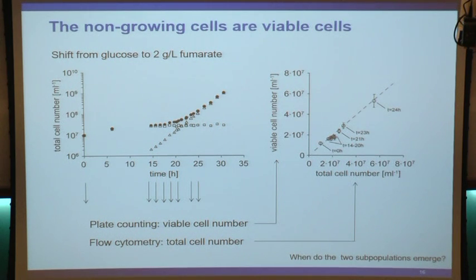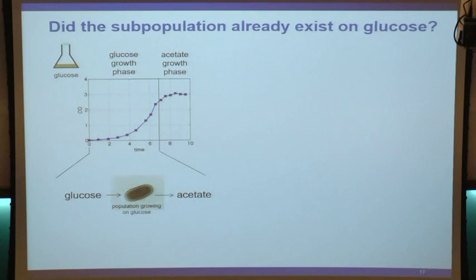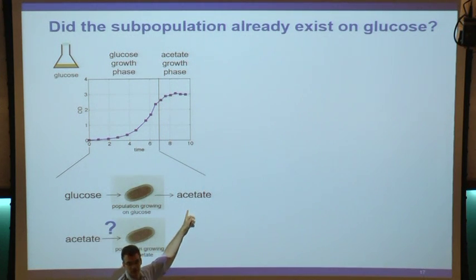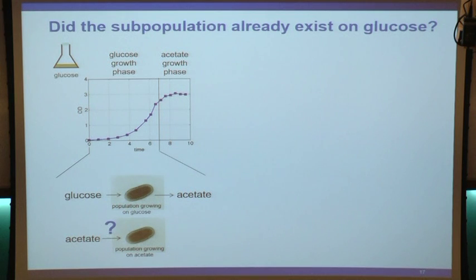Another question: when do these two subpopulations emerge? One hypothesis was that they emerge during the glucose growth phase, because on glucose, E. coli takes up glucose and produces acetate. There could be a second subpopulation present during glucose growth that consumes the acetate produced by other cells. To find out, we need to look at single cells and determine whether they consume glucose or acetate.